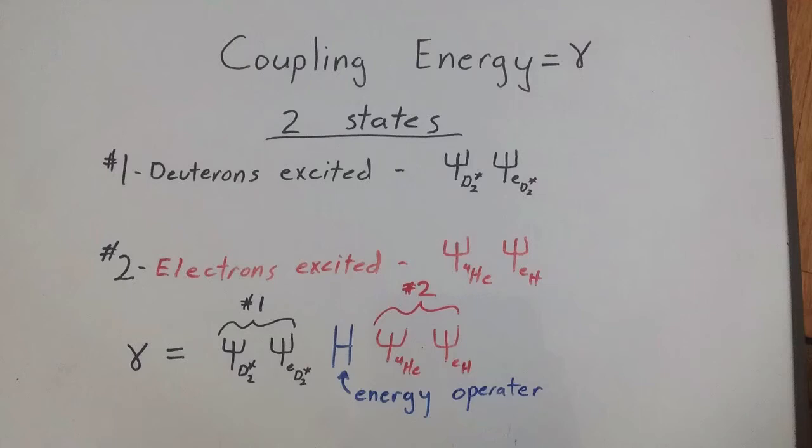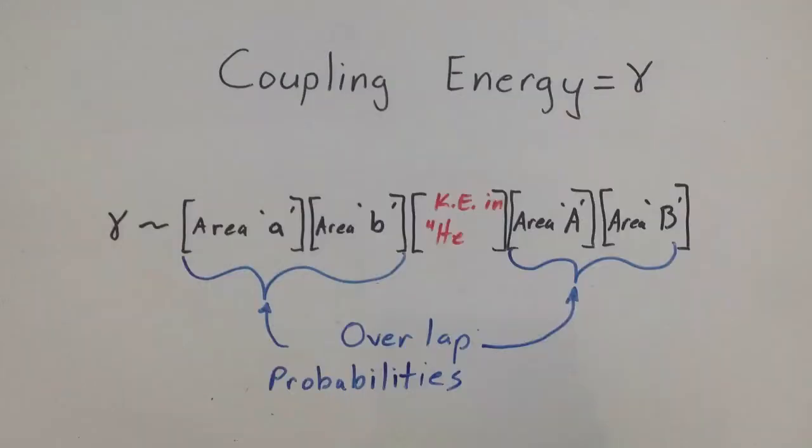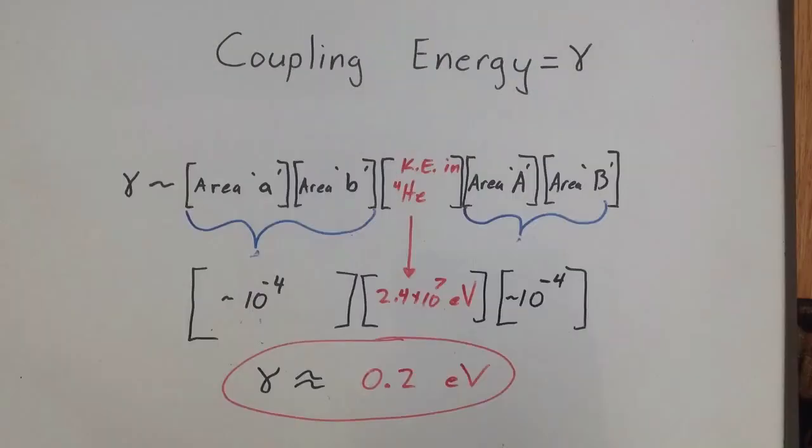There is a standard procedure to calculate the coupling energy of two states. As shown, the wave functions of one state are multiplied by the wave functions of the other state after operation of the energy operator or Hamiltonian. All this really does is multiply the areas: the small case A times the uppercase A we developed before, and B times B, all times the kinetic energy brought into this overlap of states by the deuteron and the nuclear potential, essentially the energy transfer for each probability oscillation. We can make good approximations of all these wave functions in order to calculate the coupling energy.